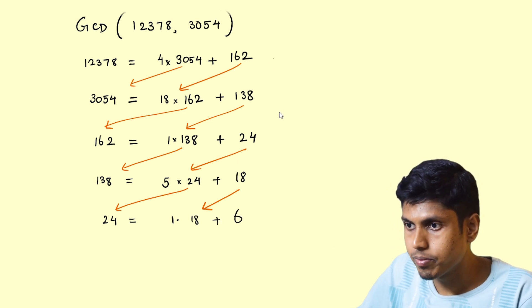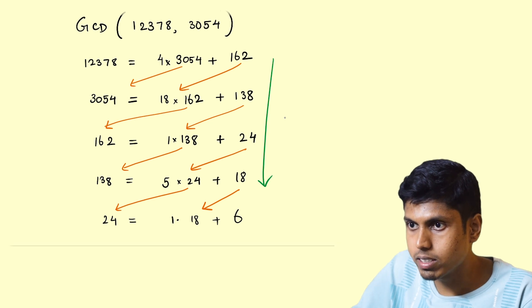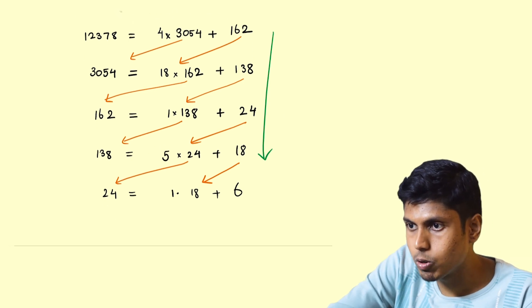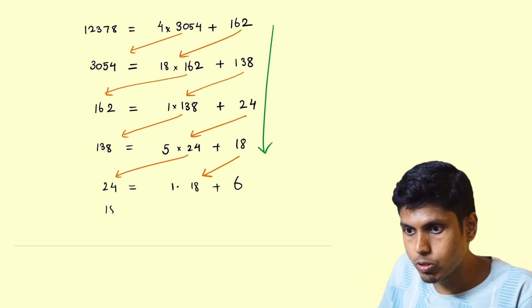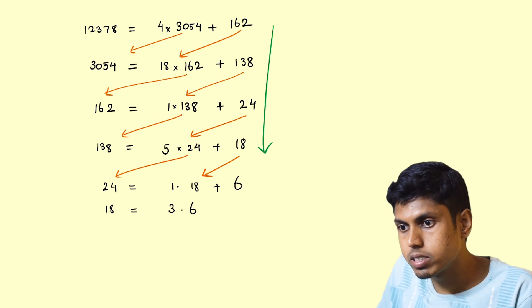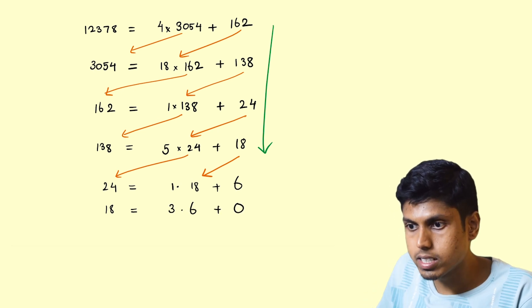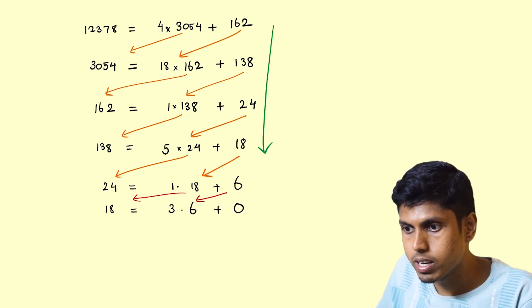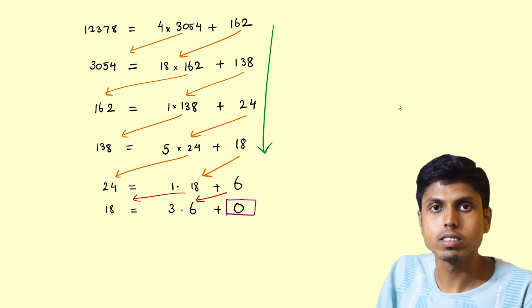You could clearly see that the remainders are strictly decreasing, so eventually we have to hit the number 0. And here you go: 18 is 3 times 6 plus 0. And tada, we landed up with the number 0.